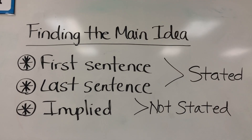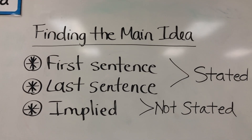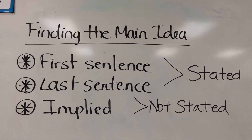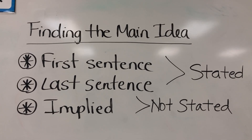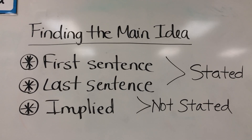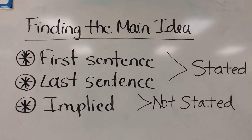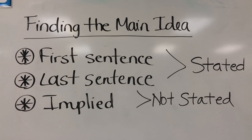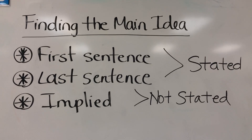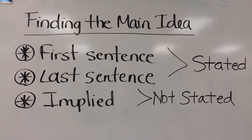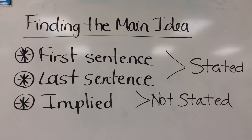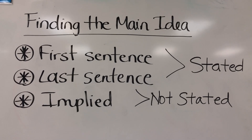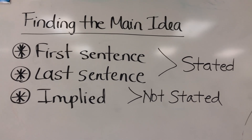We first started by talking about how we find a main idea. There are three different ways I taught the students: sometimes we find it in the first sentence or first paragraph, sometimes in the last sentence or last paragraph, and sometimes it's not stated directly — it is implied. In that case, we have to use our supporting details and clues to determine what the main idea of the overall passage is.